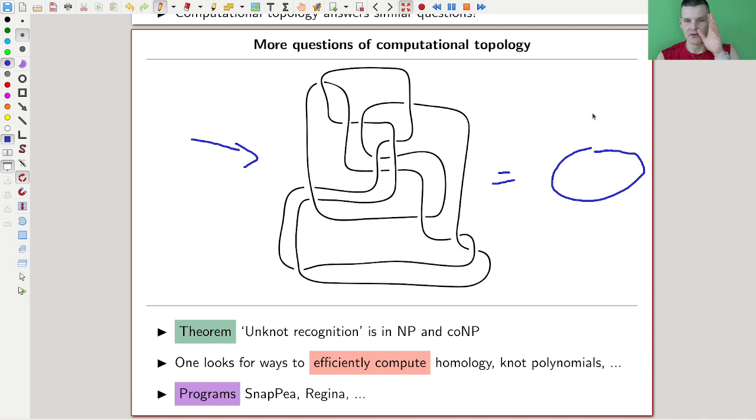That's why unknot recognition is one of those problems that you would like to know the complexity class of, and computational topology does that for you. And then really beautiful programs—SnapPy and Regina are probably the two most famous ones. I'll link them in the description.